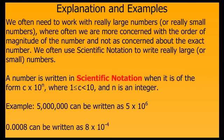We often need to work with either very large numbers — think astronomy — or very small numbers — think molecules and atoms — where we are more concerned with the order of magnitude of the number than we are with getting the number exactly right. We often use scientific notation to help us with these types of numbers.